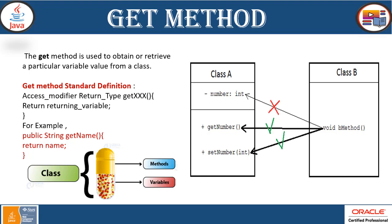The standard definition of a Get method is: access modifier, return type, get method name, and a return keyword with the returning variable. For example: public String getName() { return name; }. So if you have a bank class with a private client name variable, you would have the getClientName method returning the client name.